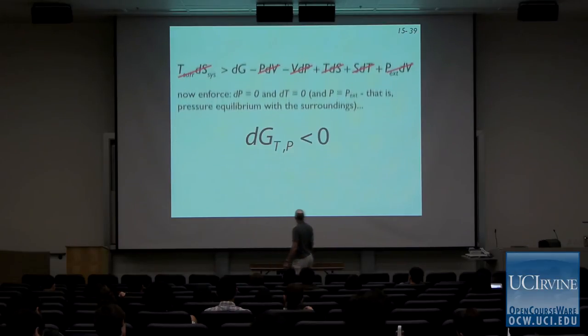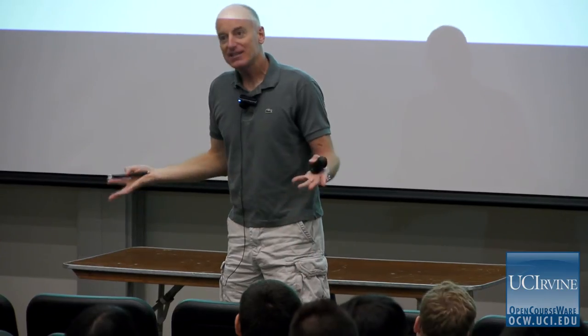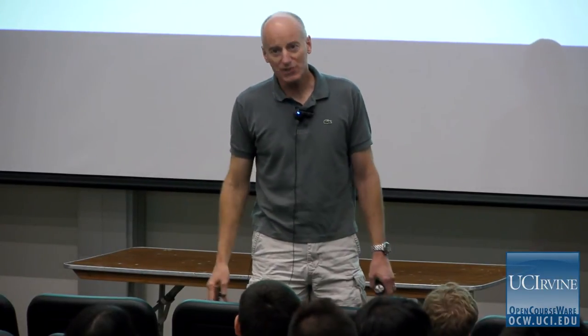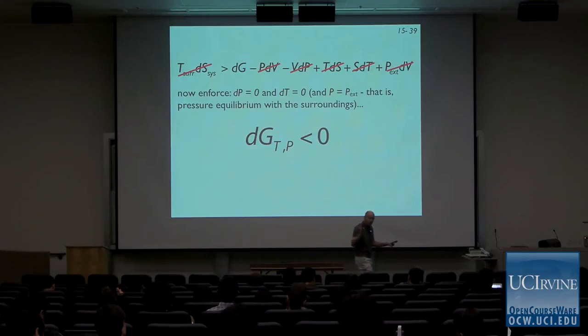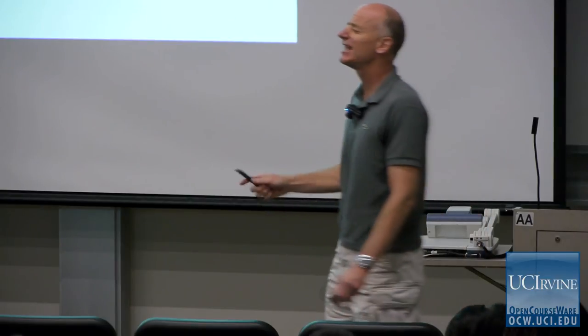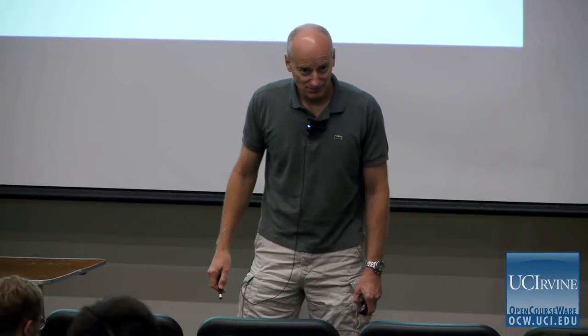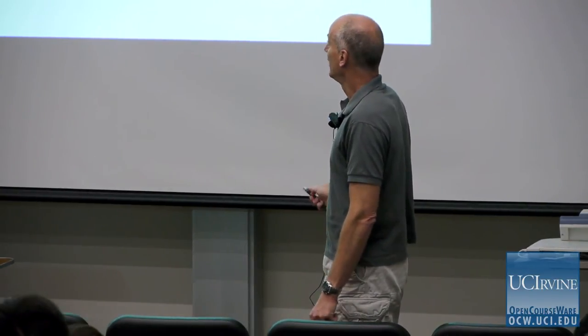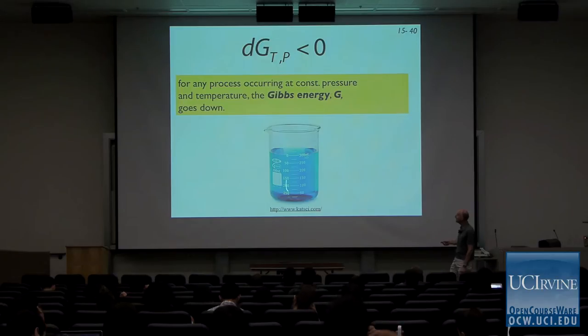That's going to be the state function we want to key on most of the time as chemists. For chemists, it's all about the Gibbs energy — we're not supposed to call it the Gibbs free energy anymore, just the Gibbs energy. This is actually one of the more important things in thermodynamics. Here's where we're doing chemistry: we're open to the atmosphere, and the Gibbs function is going to tell us whether this chemistry is going to react spontaneously. We don't need the bomb calorimeter.